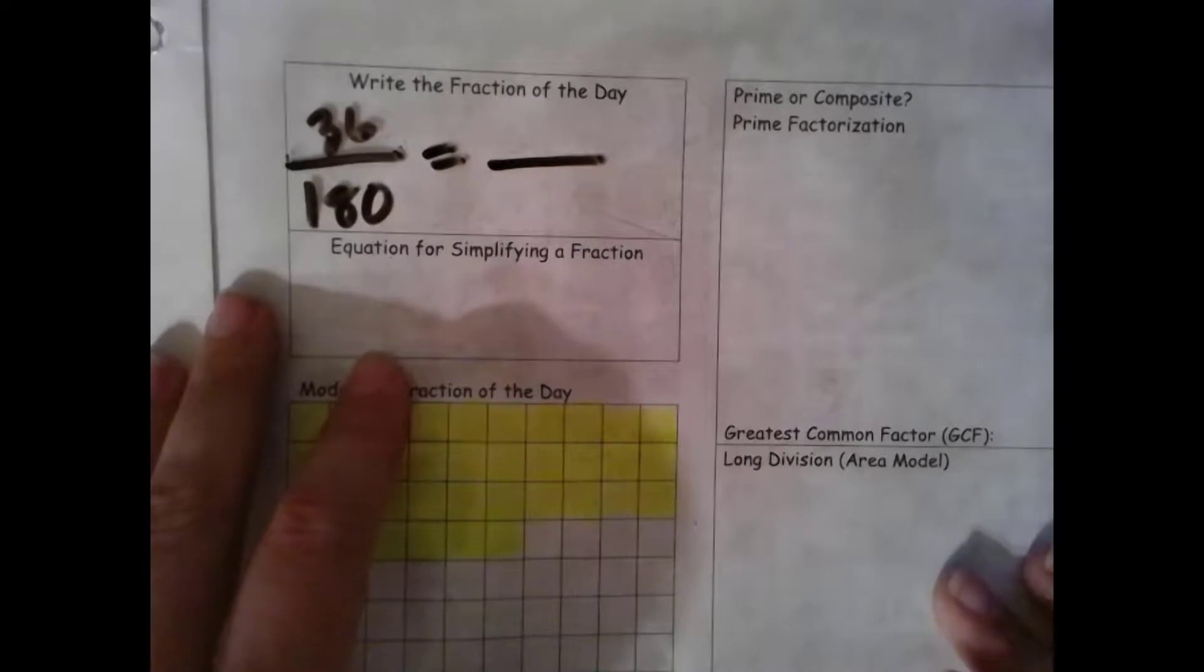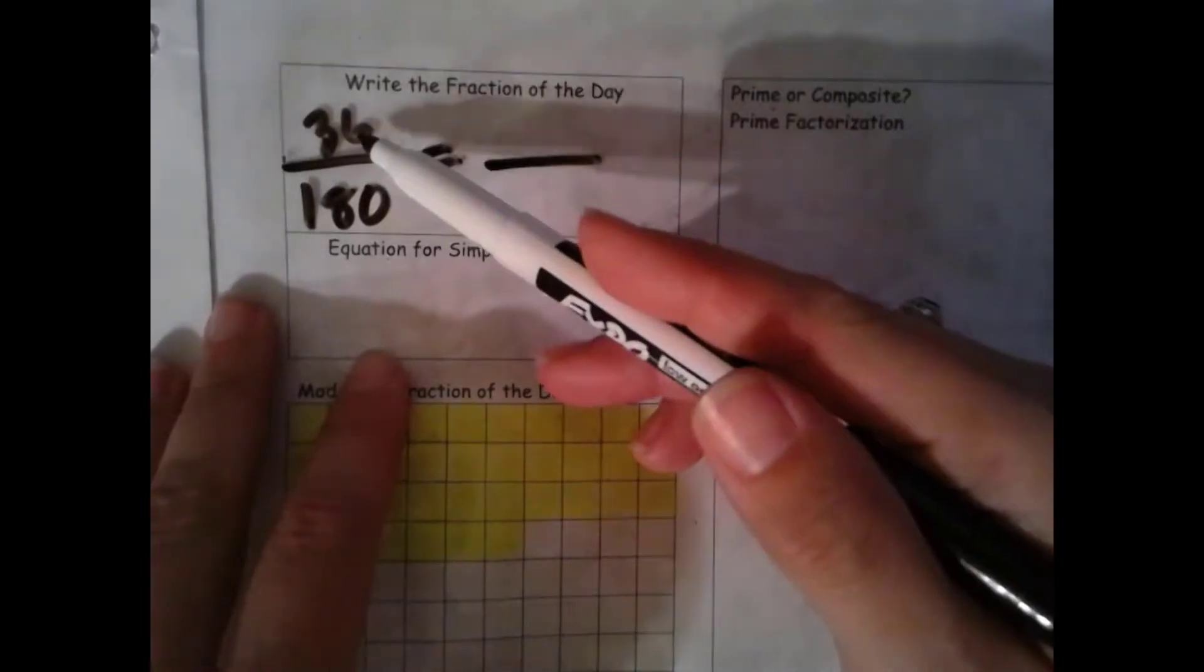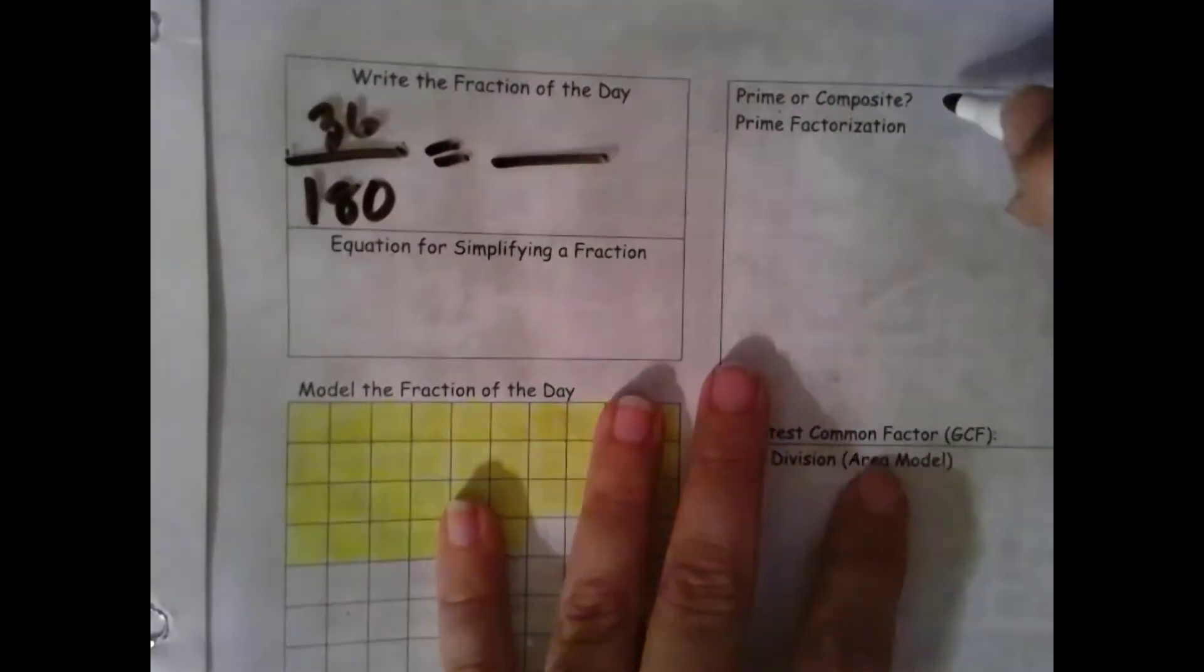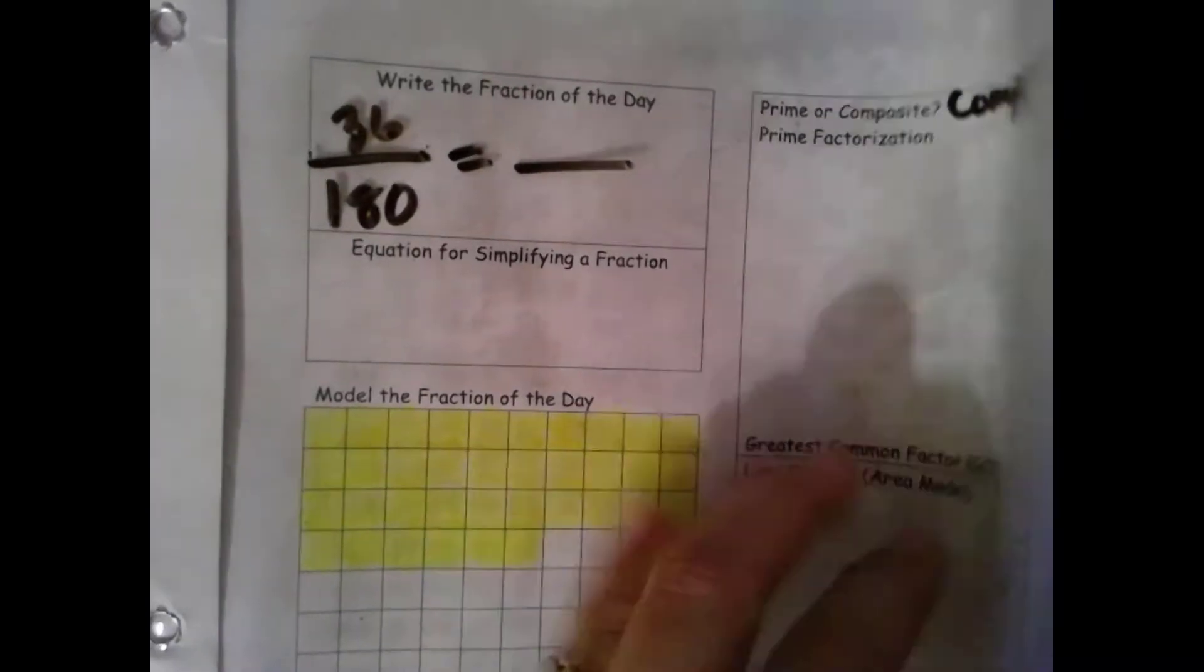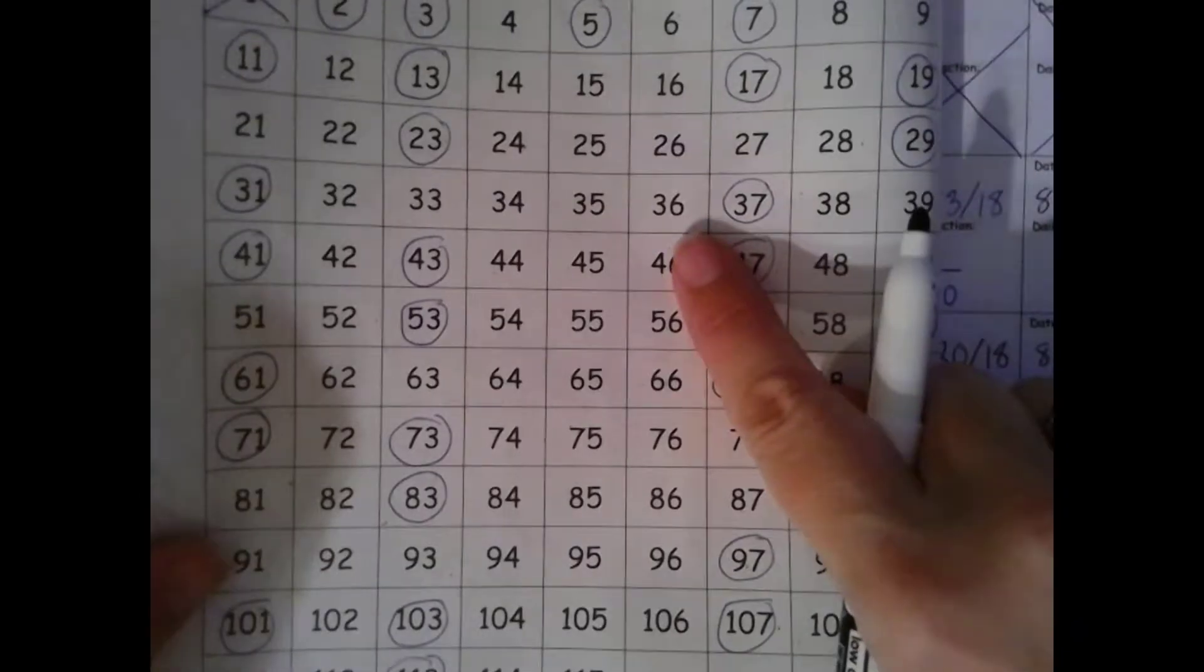First question we're going to answer is, is our numerator prime or composite? Well, it is even. And the only even number that's prime is the number 2, so it's going to be composite. If you're not sure, you want to turn it over, look at your prime number sieve, and see that it's not circled. It is composite.